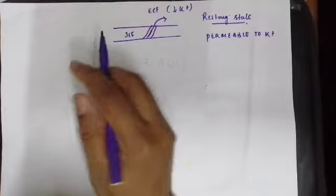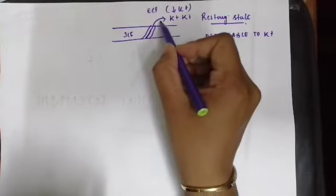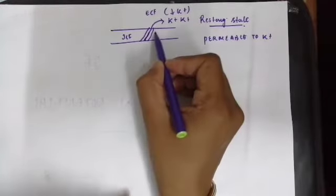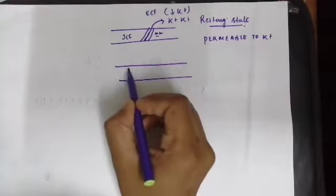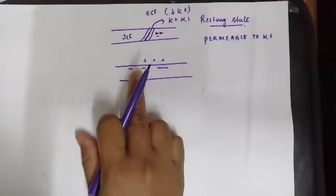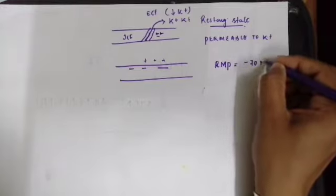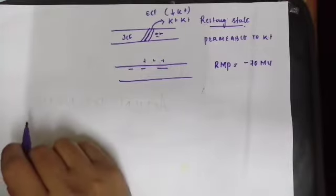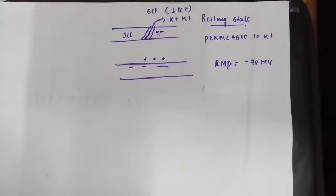Because the neuron is permeable to potassium in the resting state, potassium moves out. Because of the passage of positive charge outside, and because of the high concentration of protein anions inside the cell, there is a comparatively negative charge inside and positive charge outside. The resting membrane potential of the neuron is minus 70 millivolt, caused by the permeability to and passage of potassium ions from the cell to the extracellular fluid.